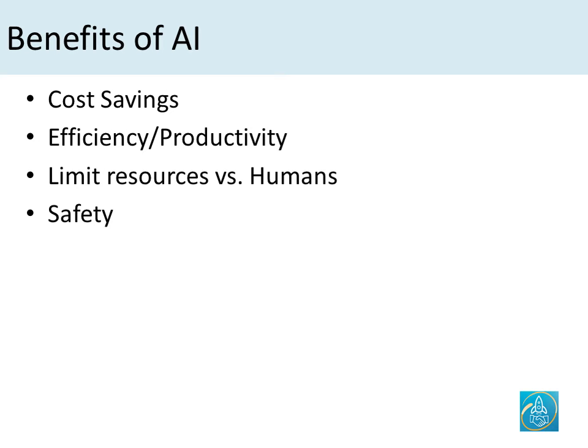What are some of the benefits of using AI? The most obvious one is cost savings — if businesses replace humans with machines, they are going to save a lot of money. Then you have efficiency and productivity: machines are not prone to error like humans, and machines can work around the clock, so there is more productivity.